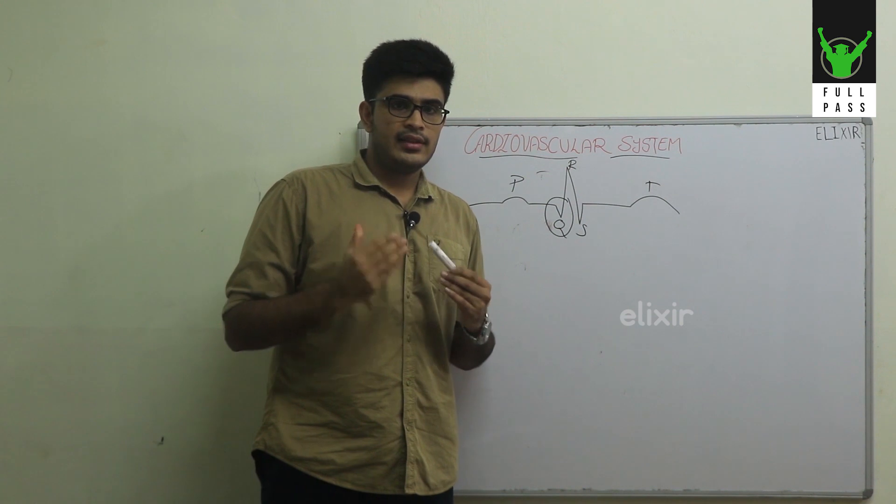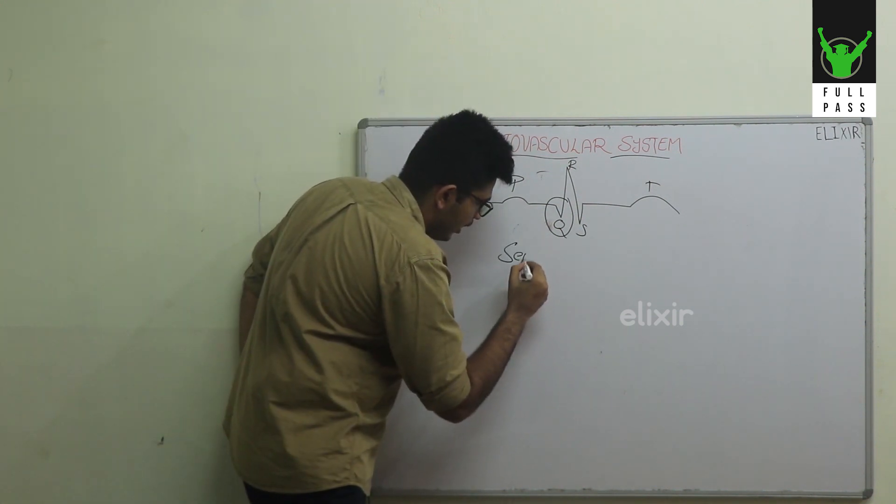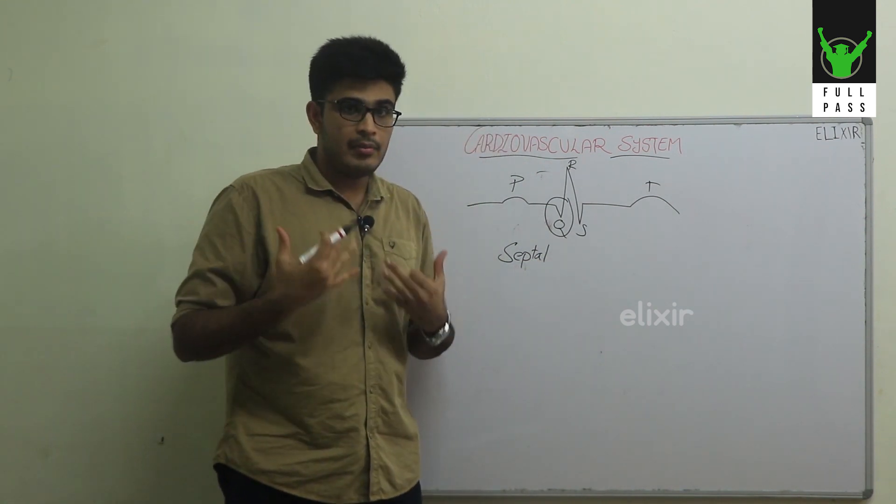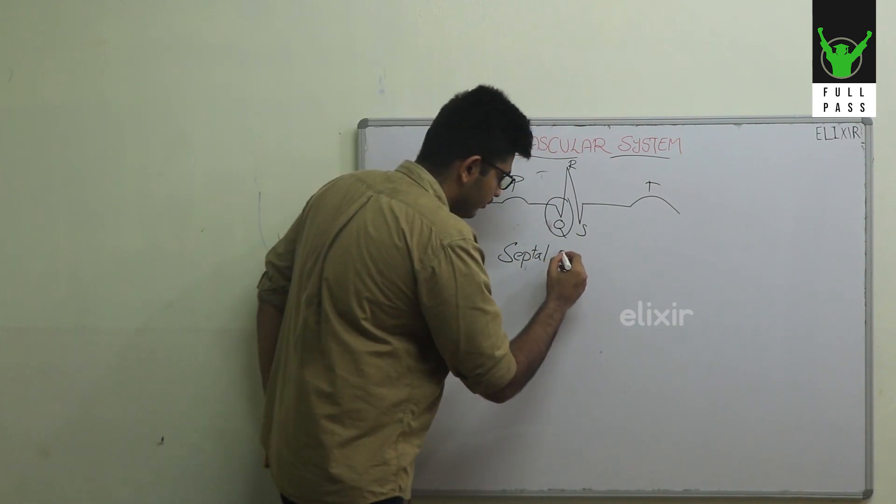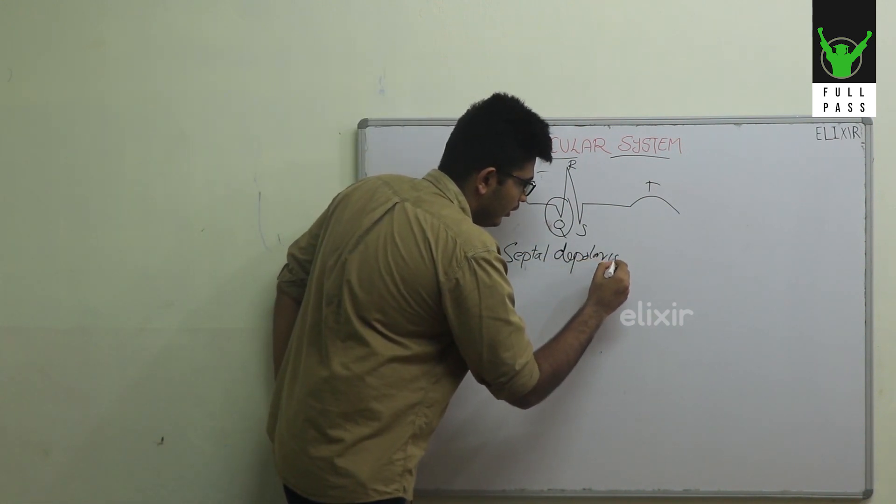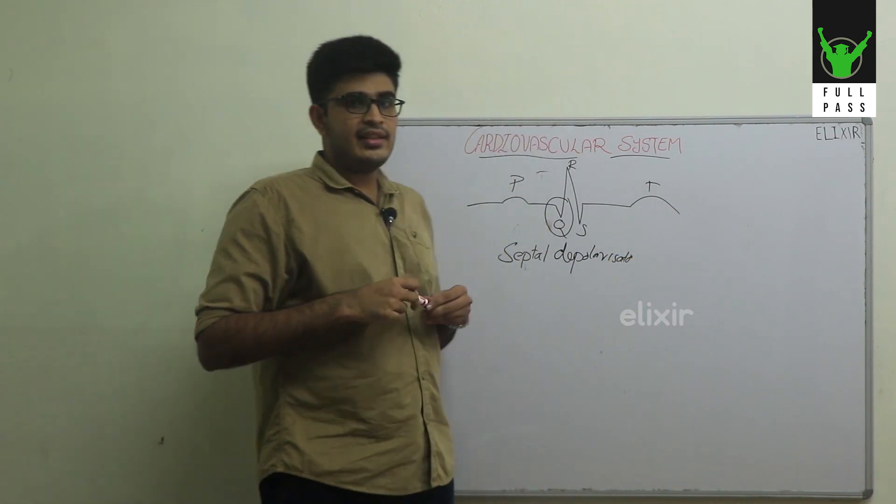The Q wave represents septal depolarization. It represents the travel of impulses within the septum for contraction. The next question is why is it negative?